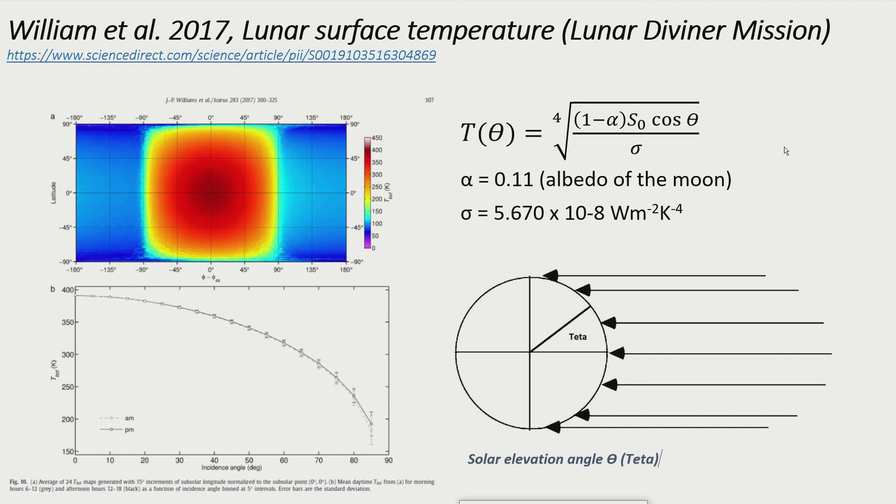Concentric circles with the same angle of incidence and thus the same temperature are formed around the point of the Sun's highest point. The shadow side of the Moon is not considered further. It simply cools down overnight and is heated up again the next day.